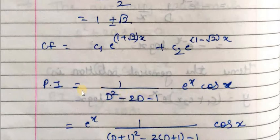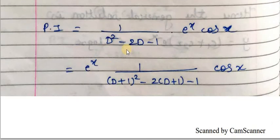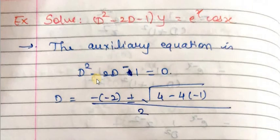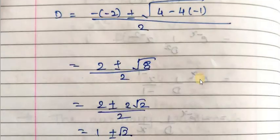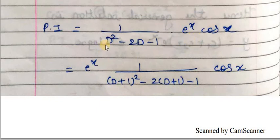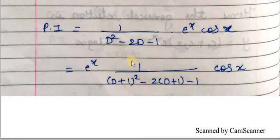Now we find PI. The formula is one over f(D) into x, so PI = one over (D² - 2D - 1) into e raised to x·cos x. Applying Case 4, here a = 1 so we replace D by D+1. The denominator becomes (D+1)² - 2(D+1) - 1, and we write e raised to x before the operator with cos x as it is.